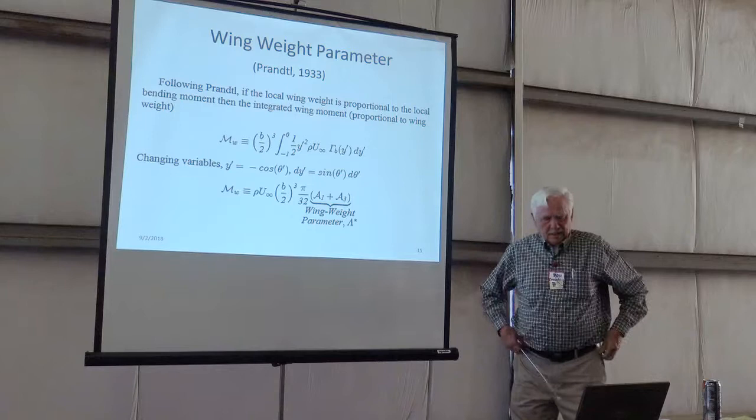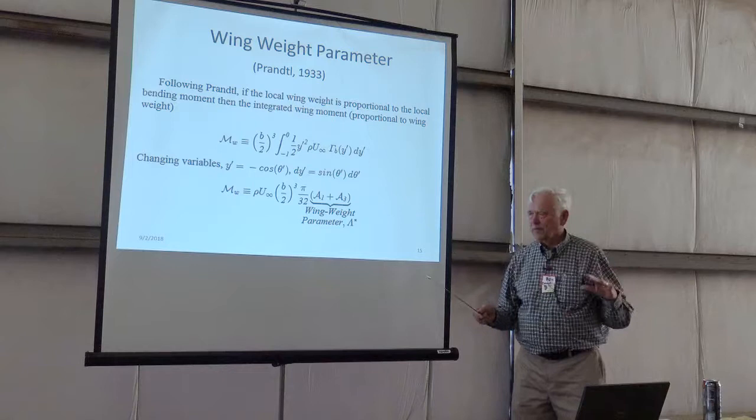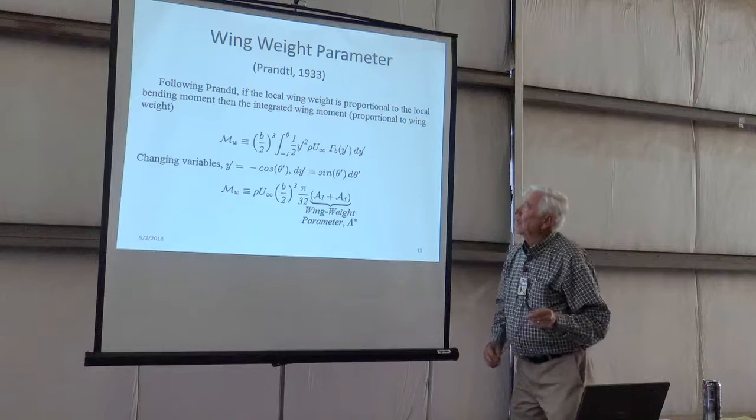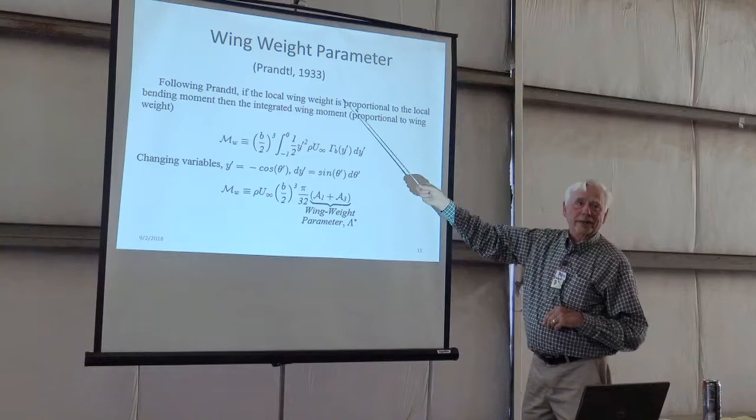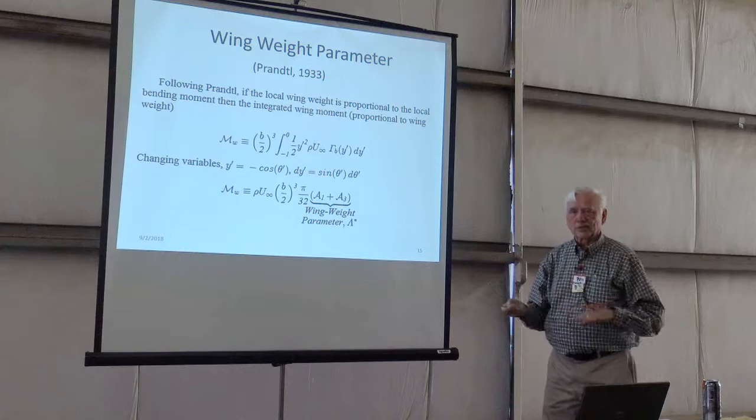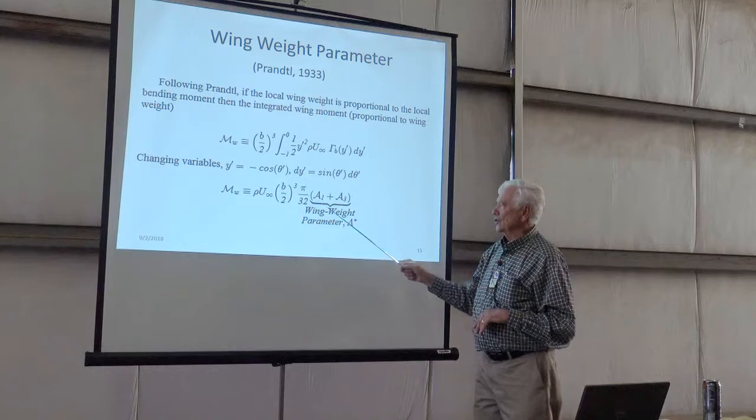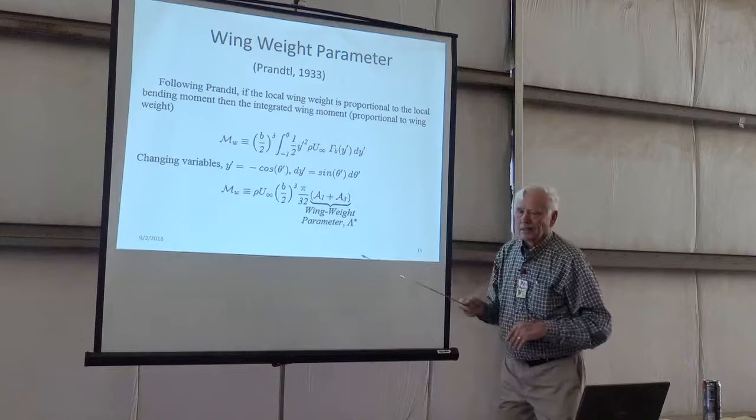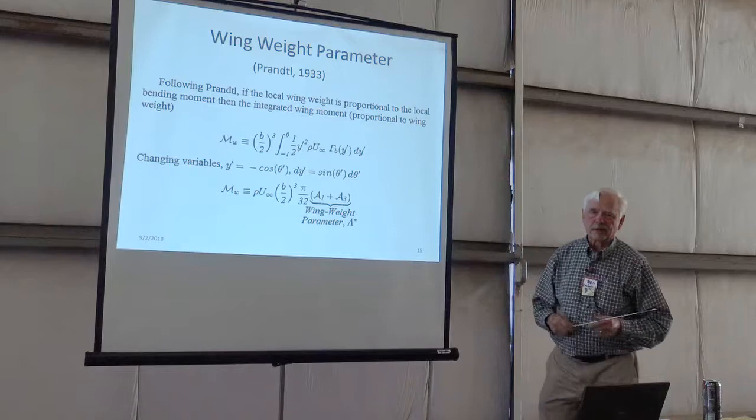Okay, so we got slope and we got the magnitude of velocity and the slope at this point being continuous. Here my good friend Ludwig Prandtl talked about a wing weight parameter. So that if the local wing weight is proportional to the local bending moment, then okay, we integrate it, and that's going to be proportional to the total wing weight. But you can do that integral, and you get the coefficients of my bound vortex, A1 plus A3, pops right out. And so that's going to be my wing weight parameter.